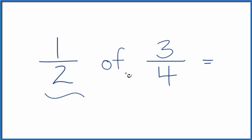If you need to find one-half of three-fourths, here's how you do it. When we have a fraction of a fraction, like one-half of three-fourths, we can replace that of with a multiplication symbol.